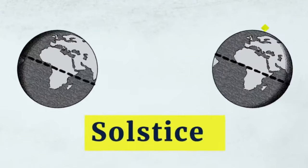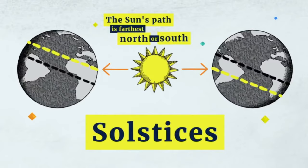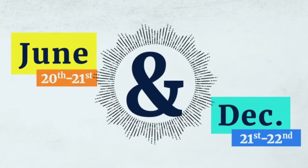Solstices designate the point where the Sun's path in the sky is the farthest north or south from the equator, which occurs around the 20th and 21st of June and the 21st and 22nd of December. The summer solstice marks the beginning of summer and is the longest day of the year, just as the winter solstice marks the beginning of winter and is the shortest day of the year.